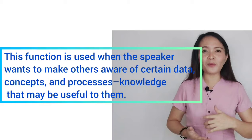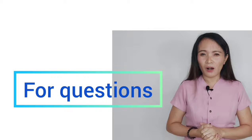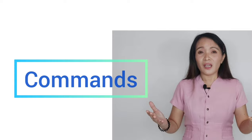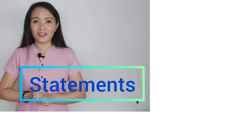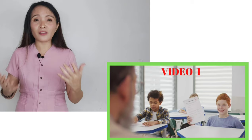The fourth function is information dissemination. Communication can be used for giving and getting information. This function is used when the speaker wants to make others aware of certain data, concepts, and processes — knowledge that may be useful to them. Getting information may come in the form of questions intended for getting details or ideas, commands like imperatives, and even through statements. Video number one is the best example: it is a teacher-student scenario where the teacher is discussing and giving information to the learners.